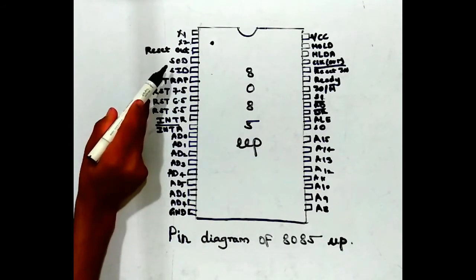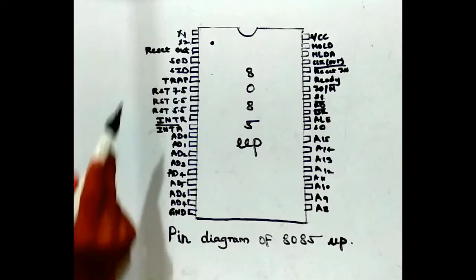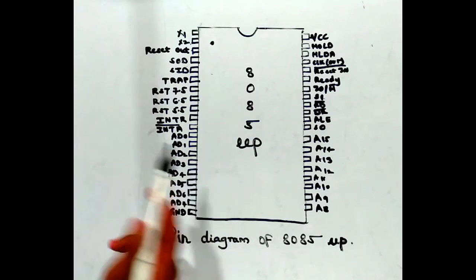The fourth and fifth pins are SOD and SID, which are serial output data and serial input data. These are active high input and output pins.